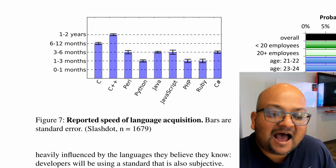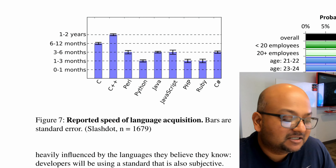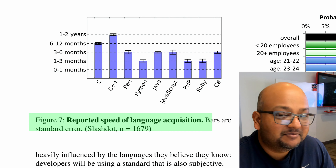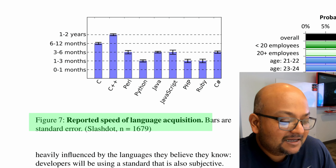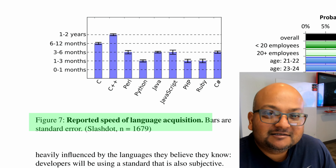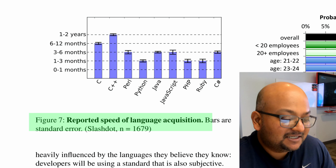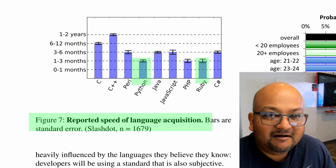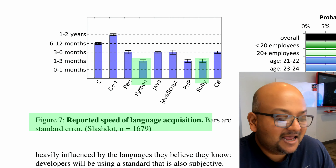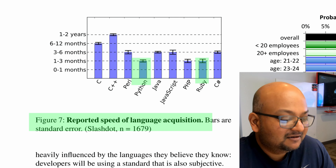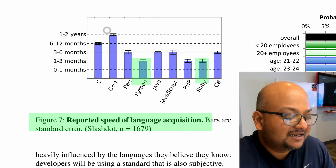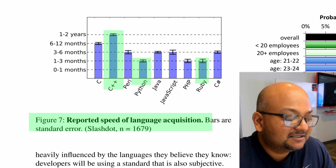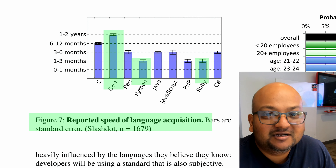The overall message of this data is that extrinsic factors far outweigh intrinsic technical factors of a programming language. The authors also asked programmers how long it takes them to learn a language. The results are not terribly surprising: languages like Python and Ruby are quite simple and take only a few months to learn, whereas a language like C++ takes about a year or more.